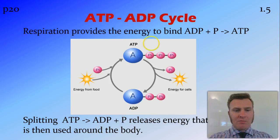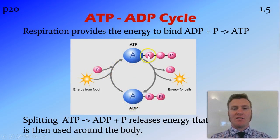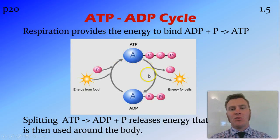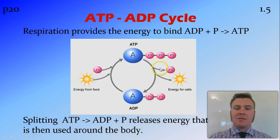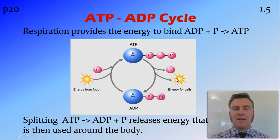Just to recap: respiration provides energy, and that energy is in the form of the bond between the phosphate and the adenosine diphosphate — this bond here is high energy. That adenosine triphosphate moves to another place, maybe a muscle, and is broken into adenosine diphosphate and an extra phosphate, and that energy is then used by the cell.